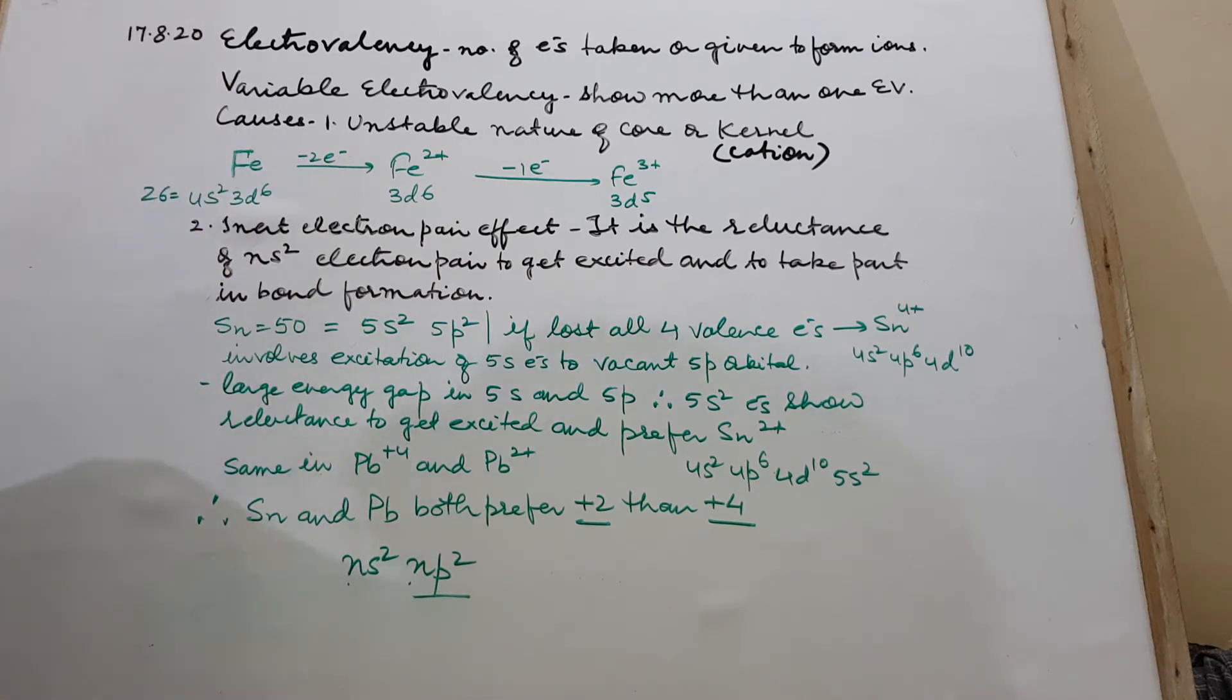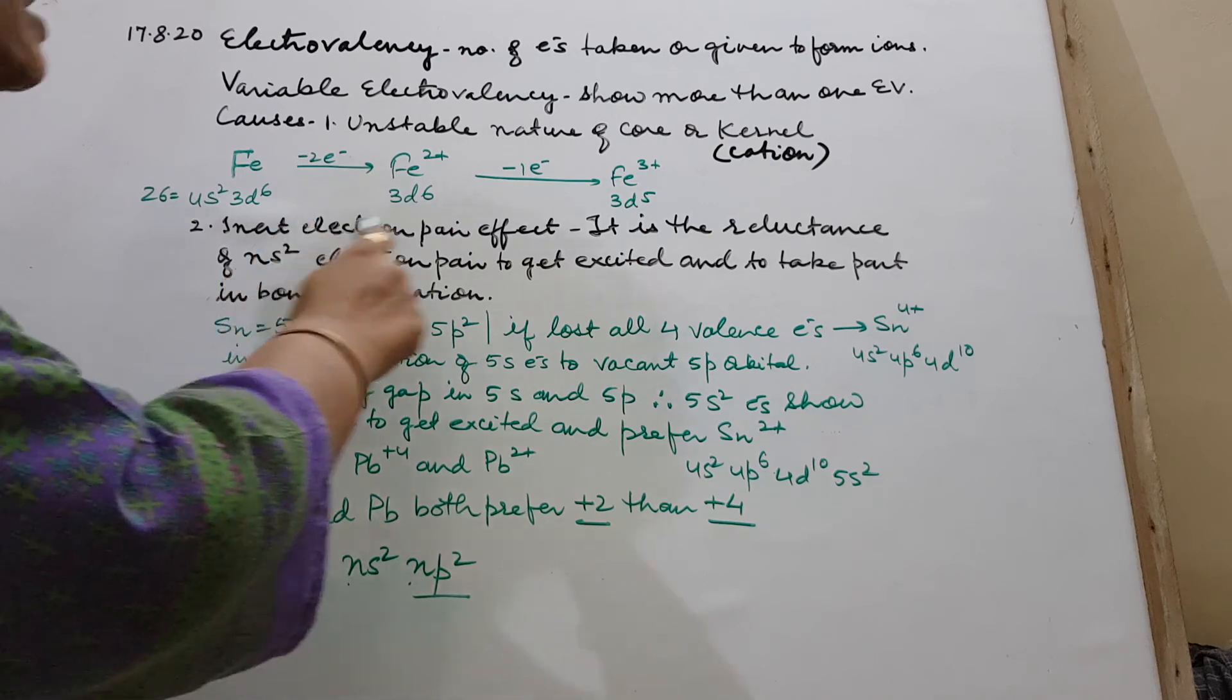So I hope this is clear. And they may ask you, what is inert pair effect? Or why do elements like Sn, tin, and Pb, plumbous or lead, preferably show plus 2 than plus 4? It is because of inert pair effect. Give reason if they ask you.